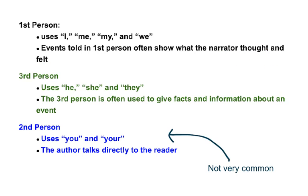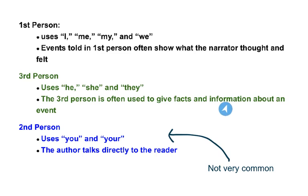On the other hand, third-person point of view uses the words he, she, and they. The third-person is often used to give facts and information about an event.